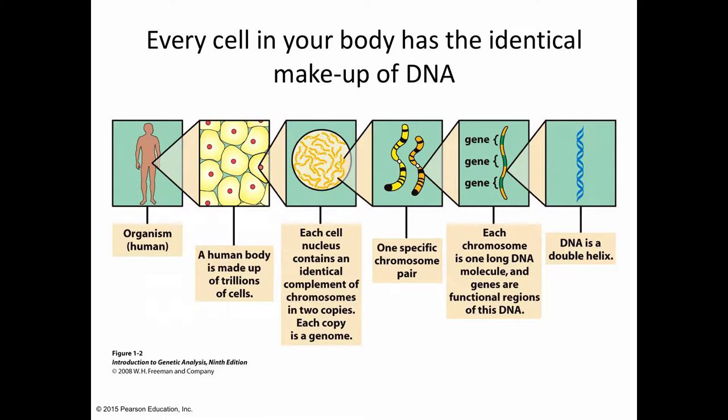DNA is the double helix I just mentioned, and each chromosome is essentially one big long DNA molecule. All of the genes for all of our traits are the functional regions of this DNA — these coding regions — and that's the part of the DNA that directs the production of proteins, which is essentially what genes do.